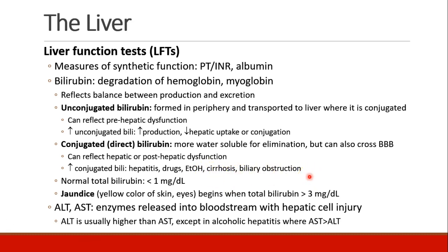A normal total bilirubin should be less than 1 mg per deciliter. Patients become jaundiced, meaning their skin or eyes develop a yellow color, when total bilirubin is greater than 3. Another liver function test is liver enzymes, ALT and AST, which are enzymes released into the bloodstream when hepatic cells are injured. Usually ALT is higher than AST, except in alcoholic hepatitis, where AST is higher than ALT.